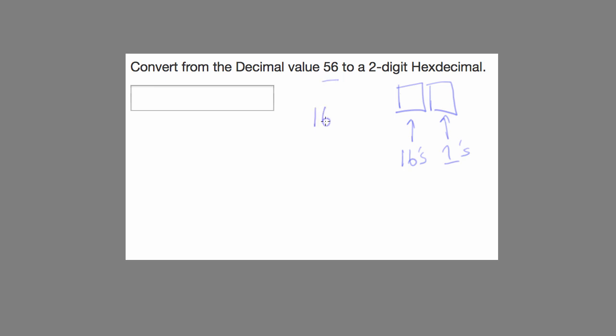So we can just look at the multiples of 16. And we know, well, 64 is bigger than 56, so 48 has to be the largest multiple of 16 that goes into 56.